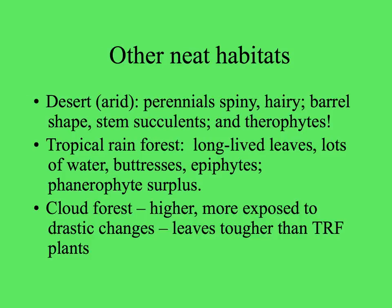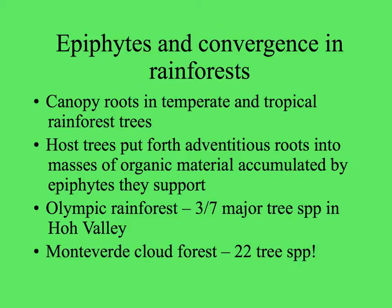In the cloud forest — the higher parts of tropical mountains — there are more drastic differences seasonally and between day and night, and leaves are tougher than on tropical rainforest plants. One really interesting convergence is that epiphytes were thought to be mostly a phenomenon of tropical rainforests, but it turns out temperate rainforests have many epiphytes as well. In both places, there is a phenomenon called canopy root formation, where trees put out adventitious roots from their branches into masses of epiphytes or organic matter to take up nutrients. In the Olympic rainforest in the Hoh Valley, Washington State, three of the seven major tree species have canopy roots, while in the Monteverde cloud forest, 22 of the many tree species present have canopy roots.